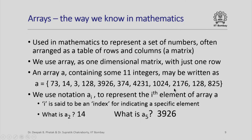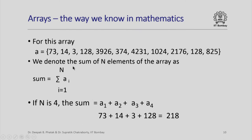Observe that this mathematical structure is so elegant. It has a single name for all its elements and individual elements can be addressed by using a subscript which is nothing but an index to an element. For this array, we can denote the sum of n elements of such an array as sum is equal to sigma A i, i varying from 1 to n. This is a typical standard mathematical notation. For example, here if n is 4 then the sum will be nothing but the total of the first four elements: 73, 14, 3 and 128, which works out to 218. How nice it would be if this concept of a mathematical array is made available to us as a programming concept.